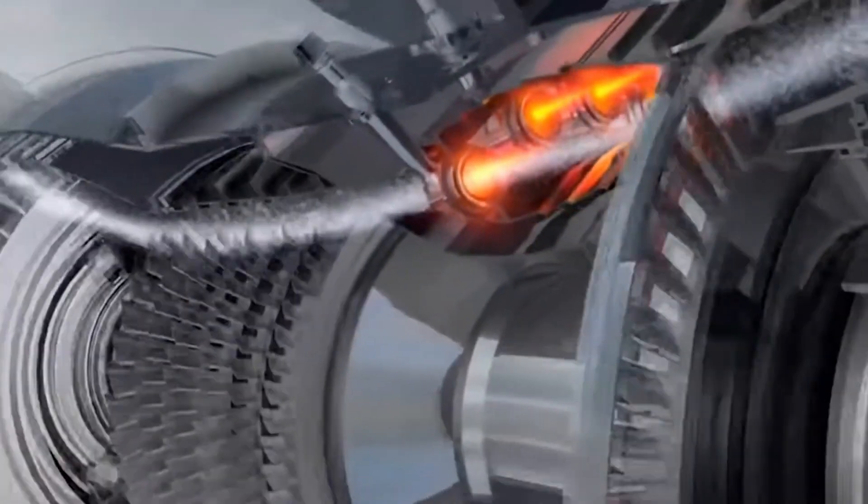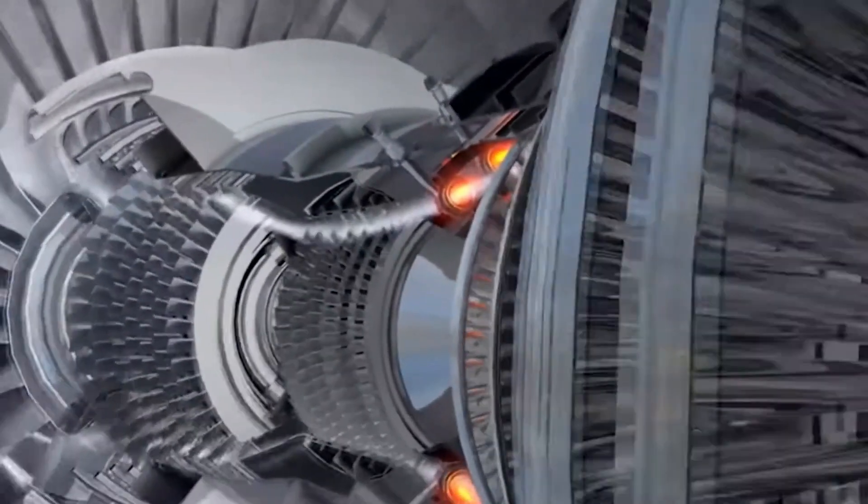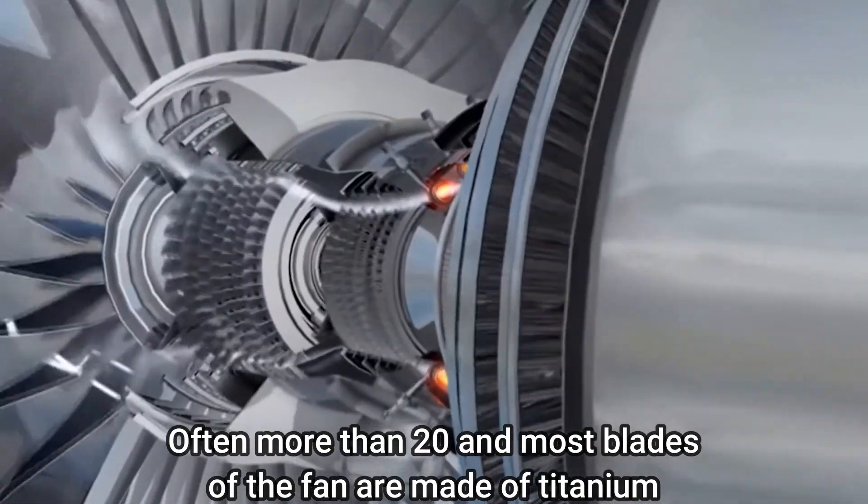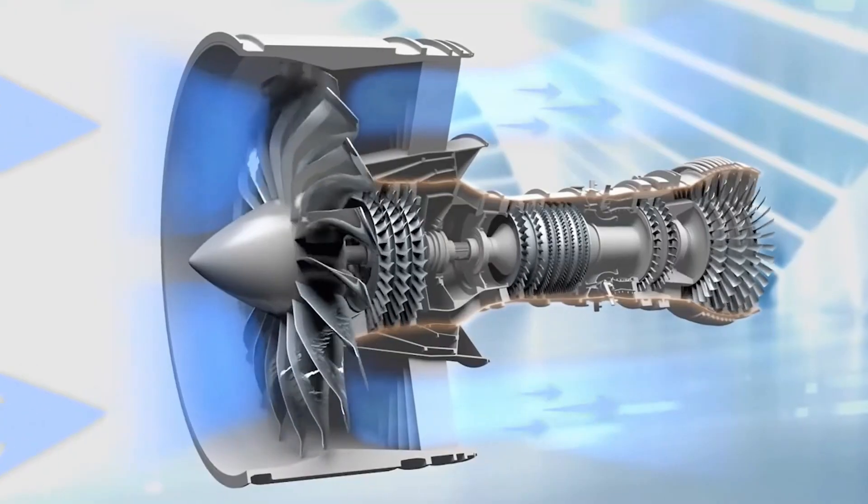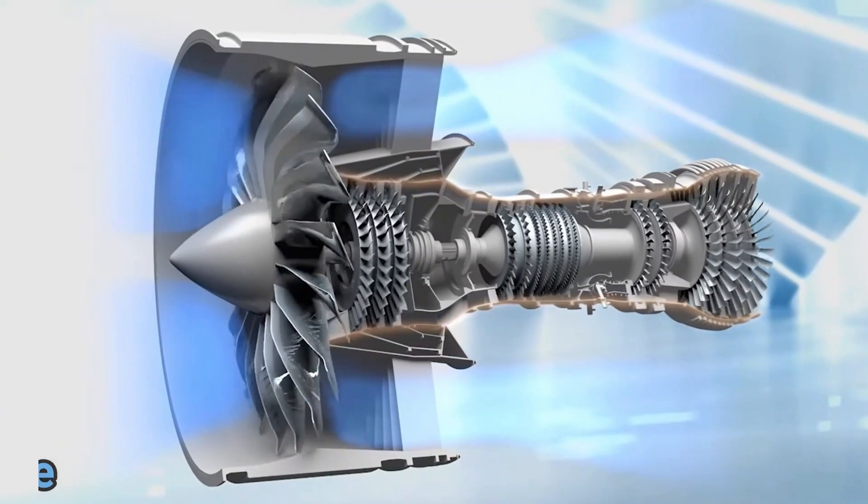The fan in a jet engine does have a lot more blades than a dust fan, though, often more than 20, and most blades of the fan are made of titanium. Next is squeeze.